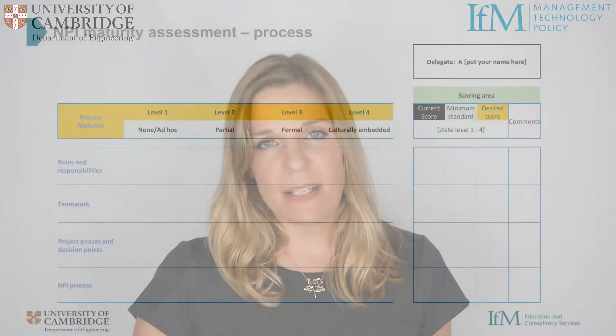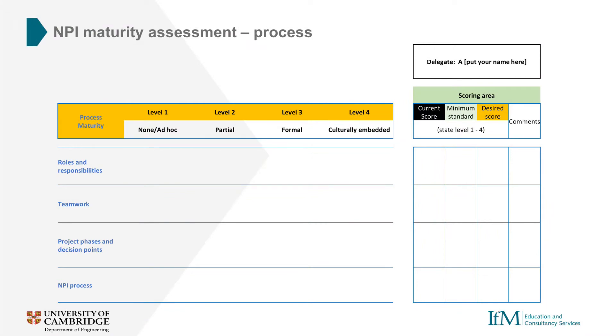We've separated each of the four P's into components which can be used to better form an assessment of our current maturity level. For example, for process maturity we can look at roles and responsibilities, teamwork, and project phases and decision points. We score each of these on a level from one to four and use scaling statements to help us better understand what each of the scores mean.